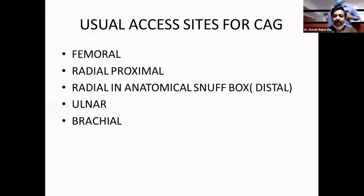Most commonly used approach initially was femoral, followed by proximal radial arteries. Now other multiple approaches are also available, which include distal radial — meaning radial artery in the anatomical snuff box — as well as ulnar artery and brachial artery. There are multiple problems with ulnar and brachial artery, so distal radial is now our preferred first choice for radial interventions.